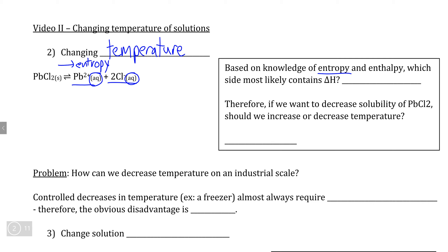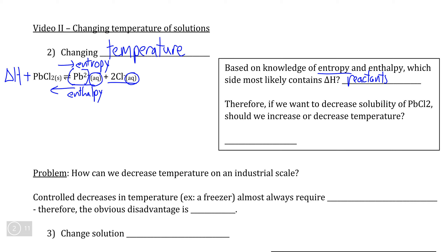So if this equilibrium forms because entropy and enthalpy favor opposite sides, that must mean that enthalpy must favor the precipitation reaction, meaning that we would expect delta H to be in the reactants. With this knowledge, we can then make a prediction about how to shift the equilibrium towards our reactants so that we decrease the concentration of lead ions dissolved in a sample of water.